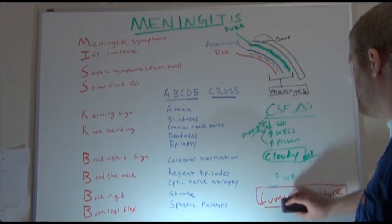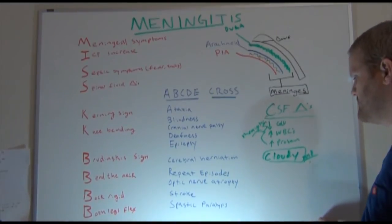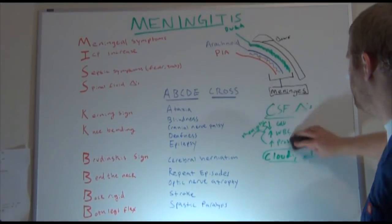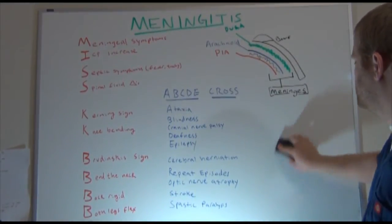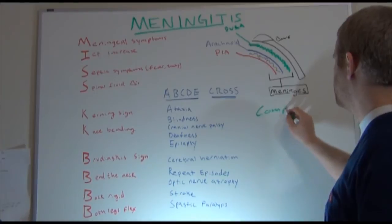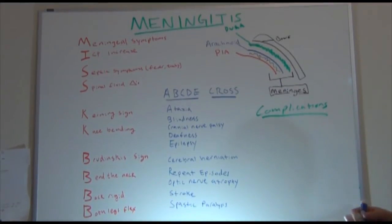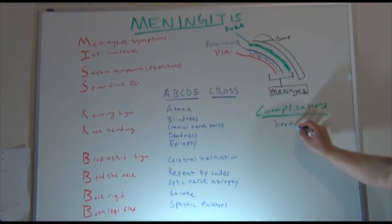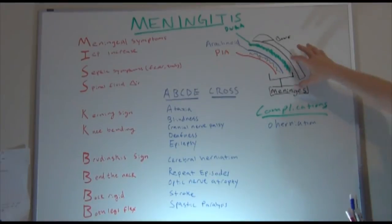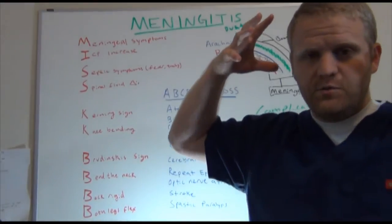Some of the biggest complications to keep in mind with your patient — the number one complication you're going to want to watch out for is brain swelling and herniation. Herniation occurs because as this tissue begins to swell, there's only so much space in the skull for the actual brain tissue. As this tissue begins to swell, it has to go somewhere.